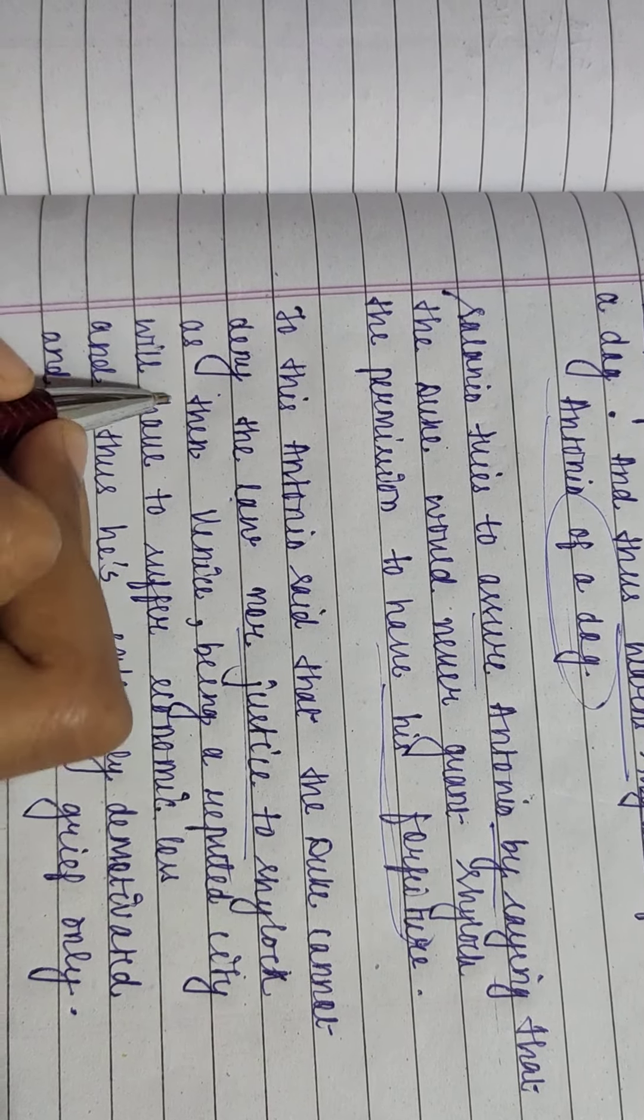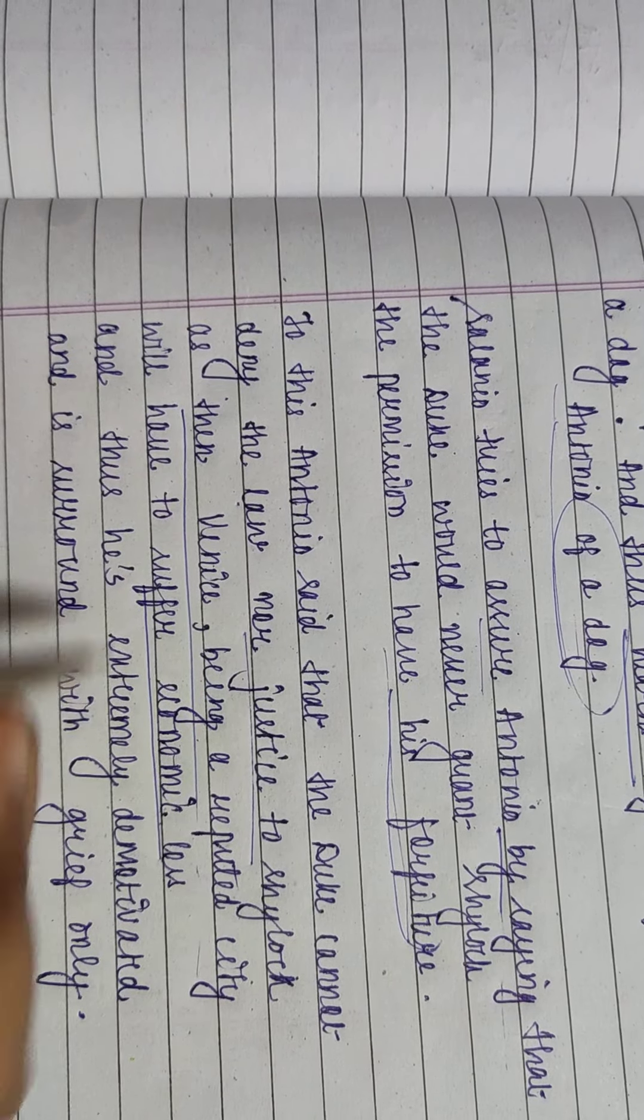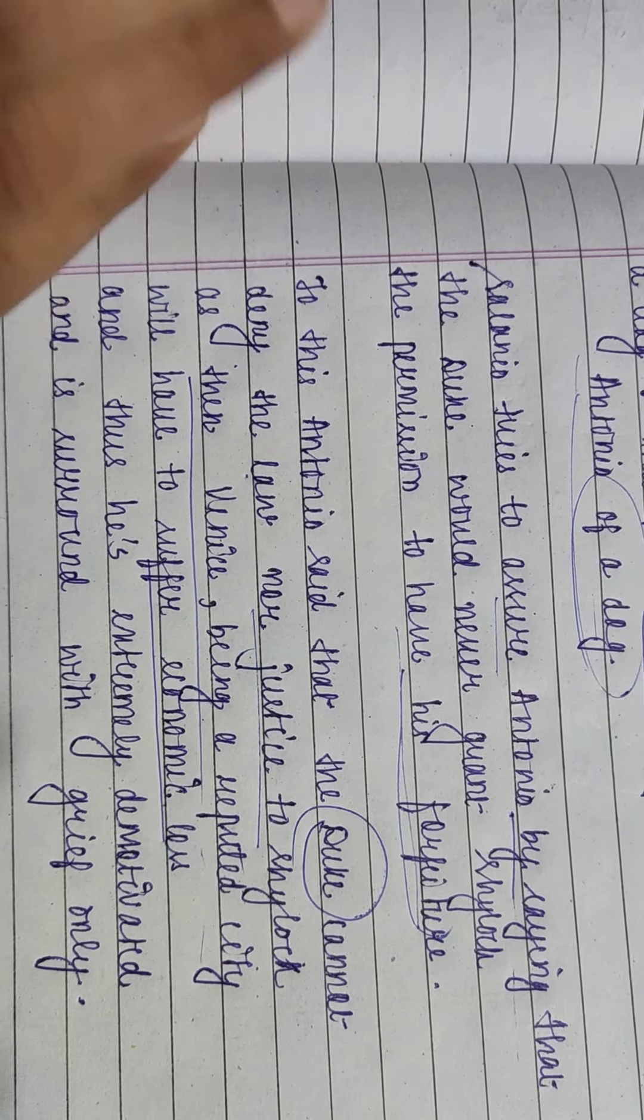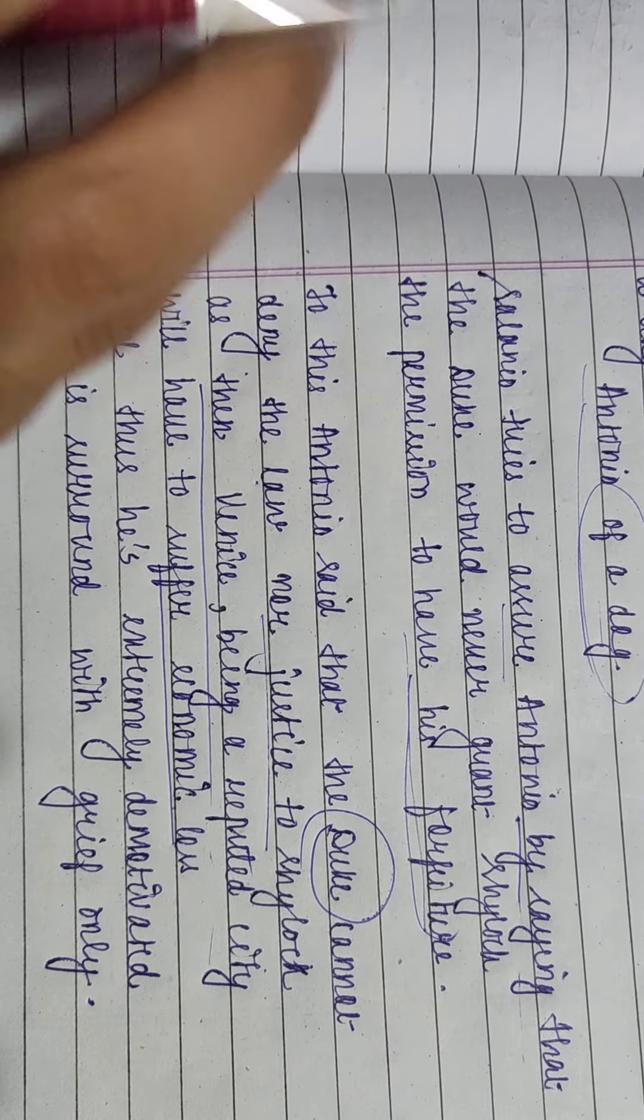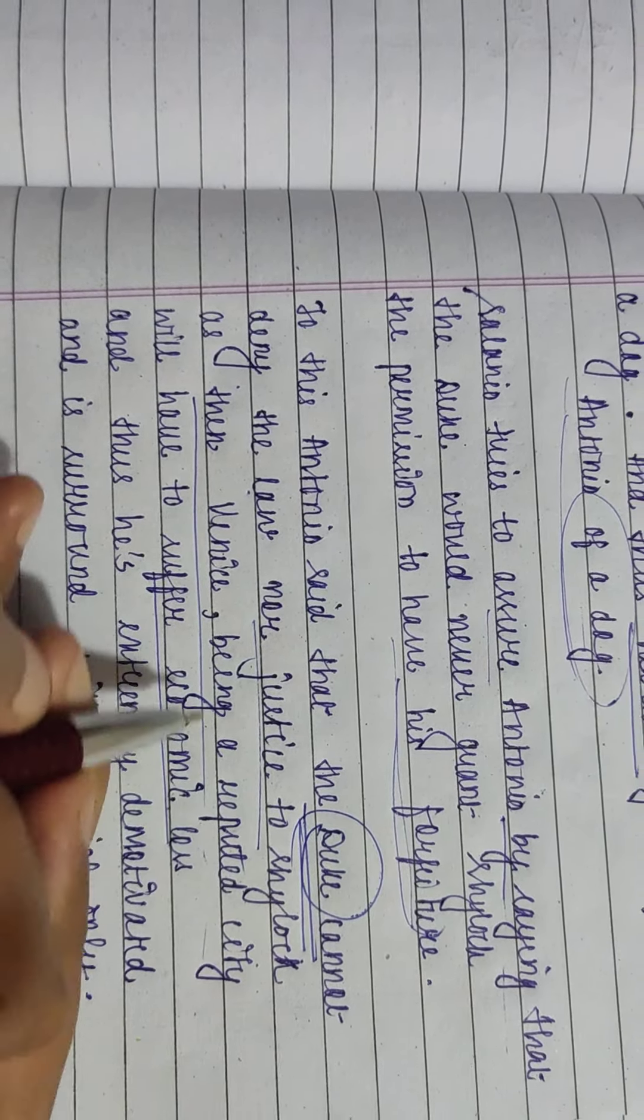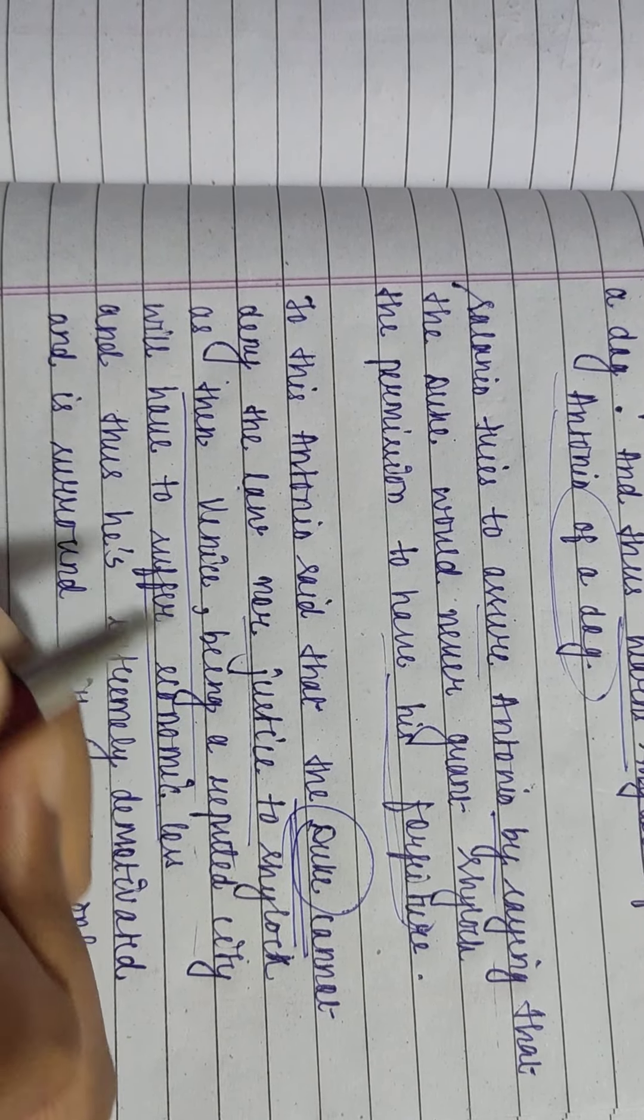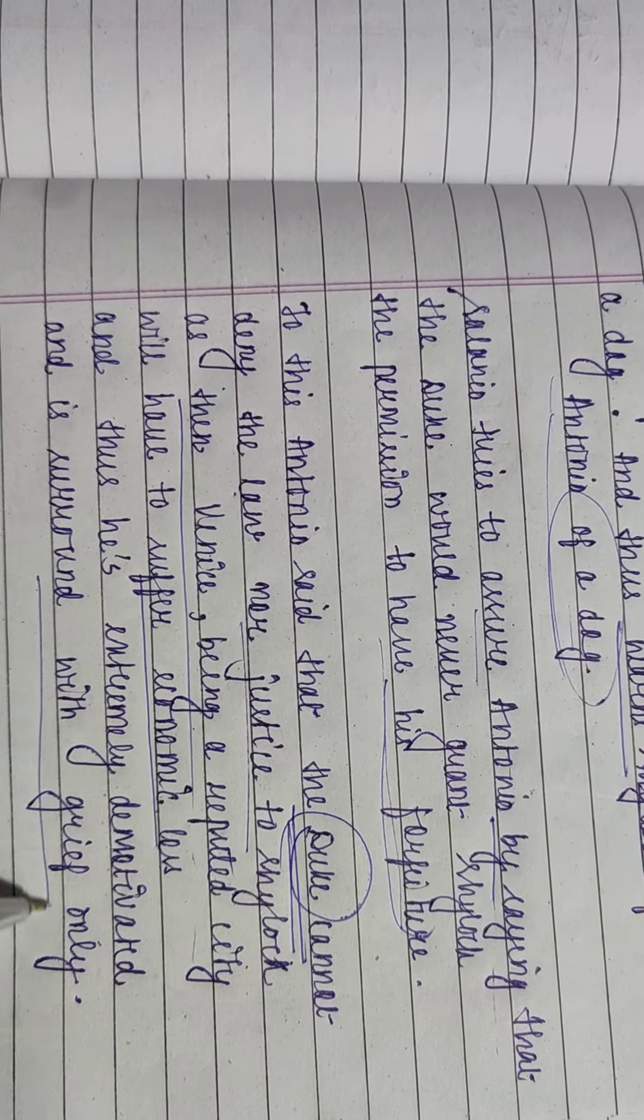To this, Antonio says that the Duke cannot deny the law nor the justice to Shylock, as then Venice, being a reputed city, will have to suffer economic loss. According to the bond, if Antonio fails to pay back the debt on time, Shylock has the power to grab a pound of flesh from the merchant Antonio's body. But if the Duke refuses Shylock to have it, then Venice will have to suffer economic loss because it is a very reputed city, and if anyone is forbidden of the justice, then obviously the reputation of Venice will go down. And thus he is extremely demotivated and surrounded with grief only.